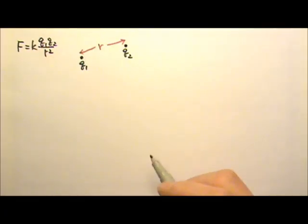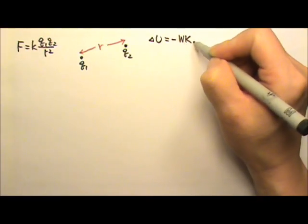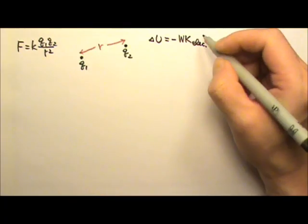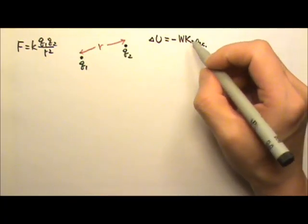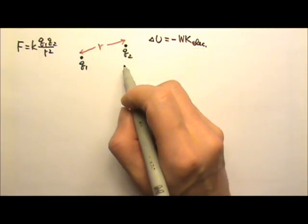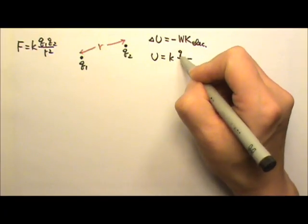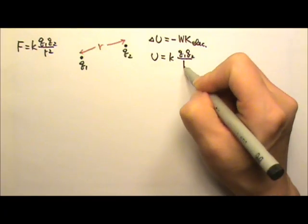Then we can use delta u equals the negative work done by the conservative electric force and some calculus to find the potential energy for the system of two point charges. The potential energy will be k q1 q2 over r.